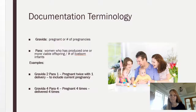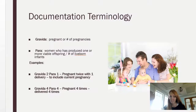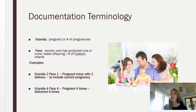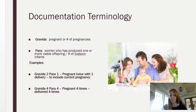Some terminology you'll see: gravida 2 para 1, or gravida 4 para 4. Gravida is the number of times a patient has been pregnant, and para is the number of live-born infants. You could be pregnant once and have two live-born infants if you had twins — gravida 1 para 2. So gravida 2 para 1 means she's been pregnant twice and delivered once, meaning she's currently pregnant.